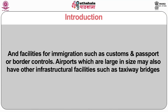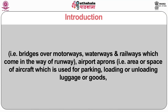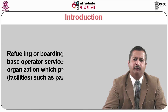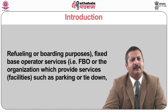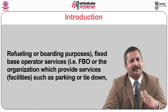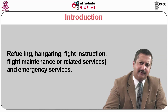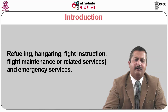Airports which are large in size may also have other infrastructural facilities such as taxiway bridges which are bridges over motorways, waterways and railways which come in the way of runway. Airport aprons which are spaces for aircraft used for parking, loading or unloading luggage or goods, refueling or boarding purposes. Fixed base operator services such as organizations which provide services like parking or tie-down, refueling, hangaring, flight instruction, flight maintenance or related services, and also emergency services.